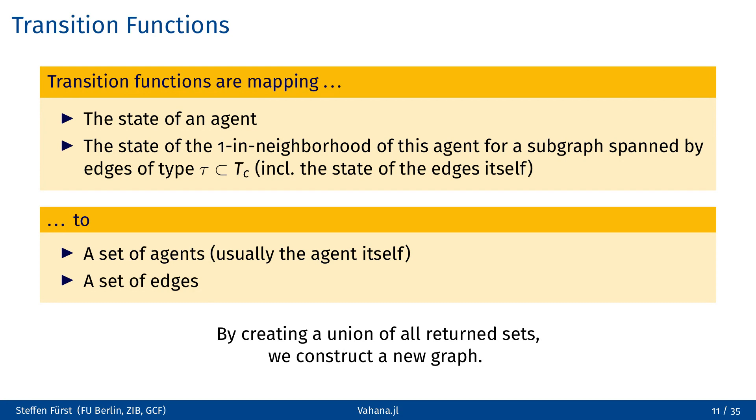The result of the transition function is a set of agents, often only the called agent with a modified state, and a set of edges. Both can be empty sets, and edges can be only added between agents in the neighborhood and the agent in question. By taking the union of all returned sets, Vahana constructs a new graph. In the initial prototype, this principle was consequently executed and even the invariant parts of the graph had to be reconstructed by the agents. However, in the current version, when a transition function is called, the types of edges and agents whose state may change must be explicitly specified.